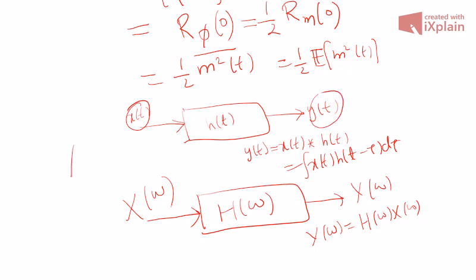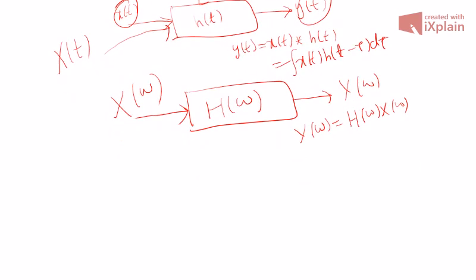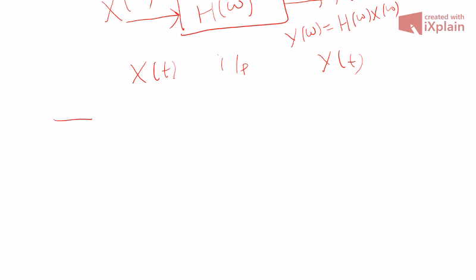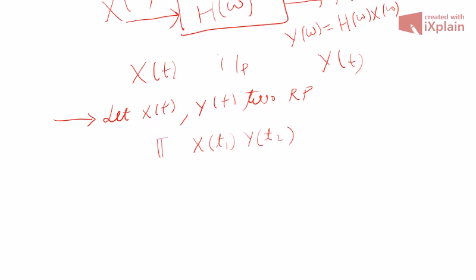Now instead of deterministic signals, what if x(T) and y(T) are random processes? If a random process is passed through a linear time-invariant (LTI) system, what happens to the autocorrelation function and power spectral density? Since we are dealing with multiple random processes — input random process x(T) and output random process y(T) — it becomes necessary to understand joint random processes. We define something called cross-correlation. If x(T) is sampled at time t1 and y(T) at time t2, the expected value of x(t1)*y(t2) is called the cross-correlation.